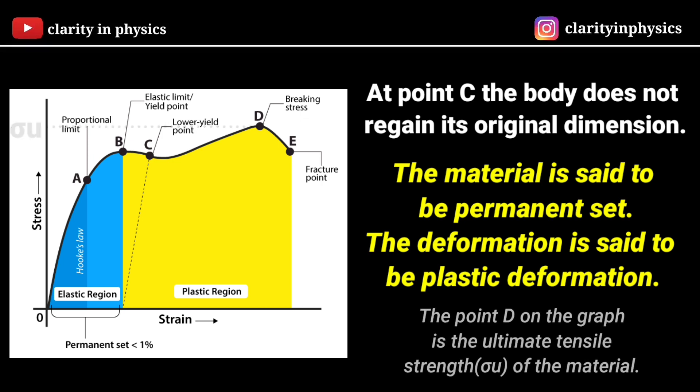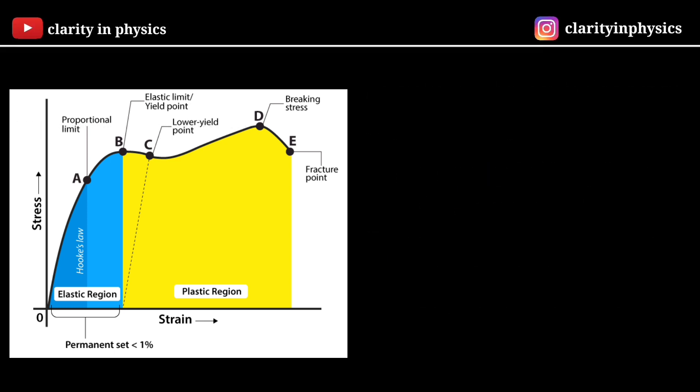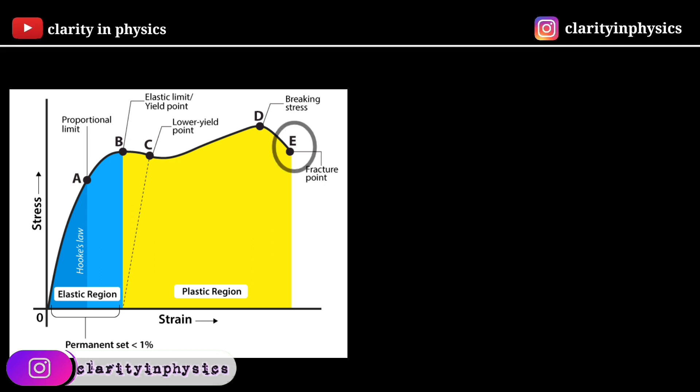The point D on the graph is the ultimate tensile strength of the material. Beyond this point, additional strain is produced even by a reduced applied force and fracture occurs at E.